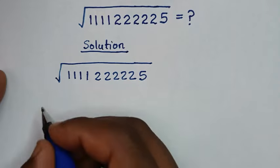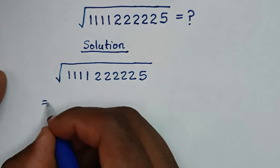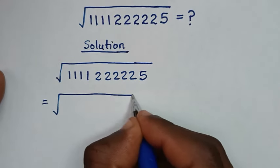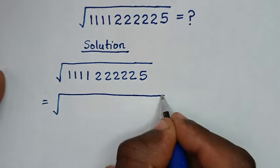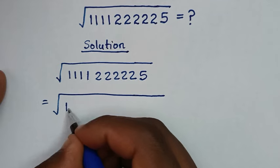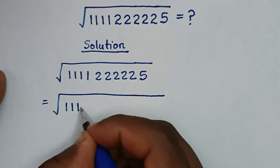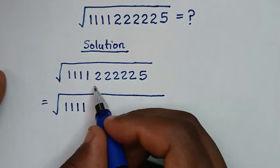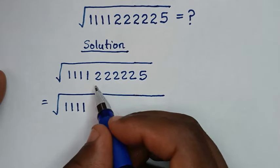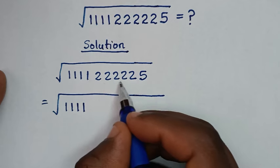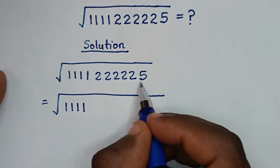So, it will be equal to square root of 1s, we have 4. So, 1, 2, 3, 4. Then the left digits, they are 1, 2, 3, 4, 5, 6.